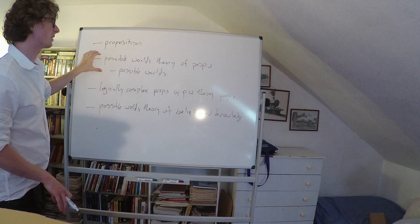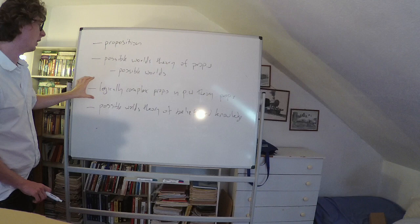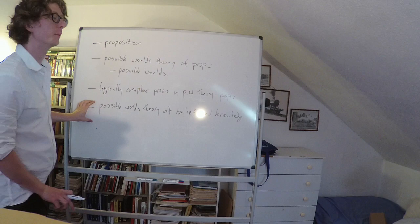So these are the four things we're going to do today: introduce the notion of proposition; talk about the possible worlds theory of propositions, starting with what possible worlds are; think about how logically complex propositions work in the possible worlds theory; and then use possible worlds to start thinking about epistemological notions like knowledge and belief.